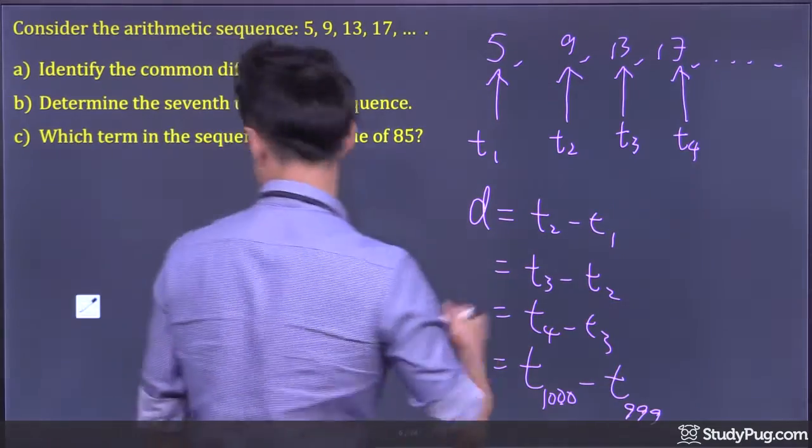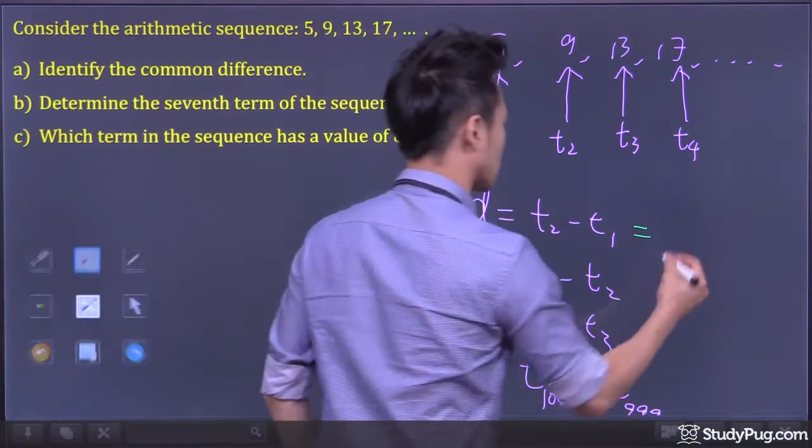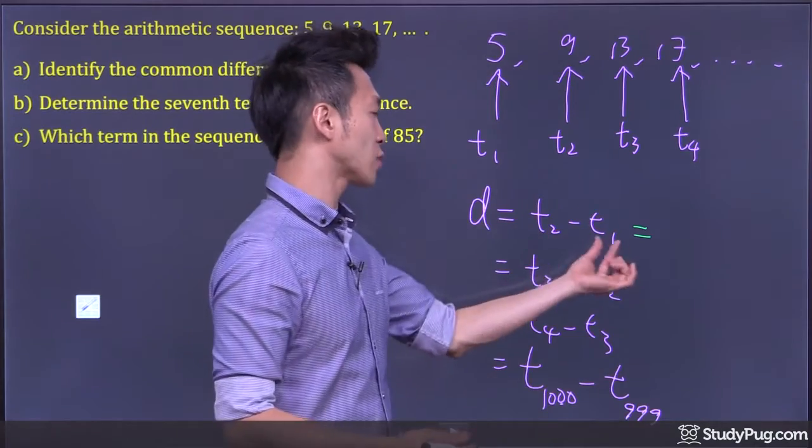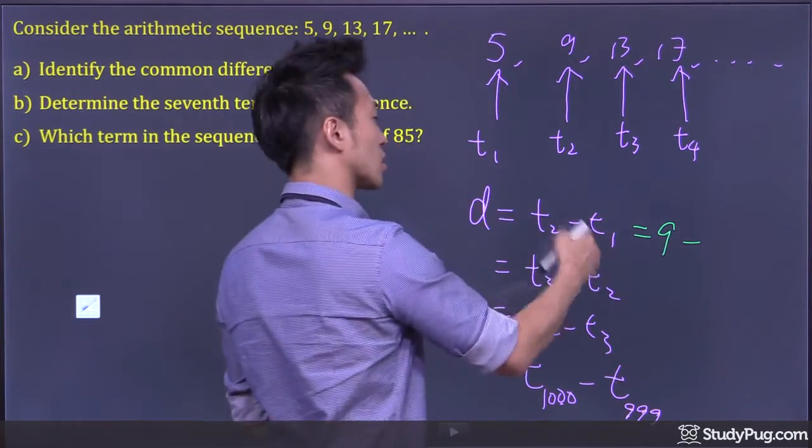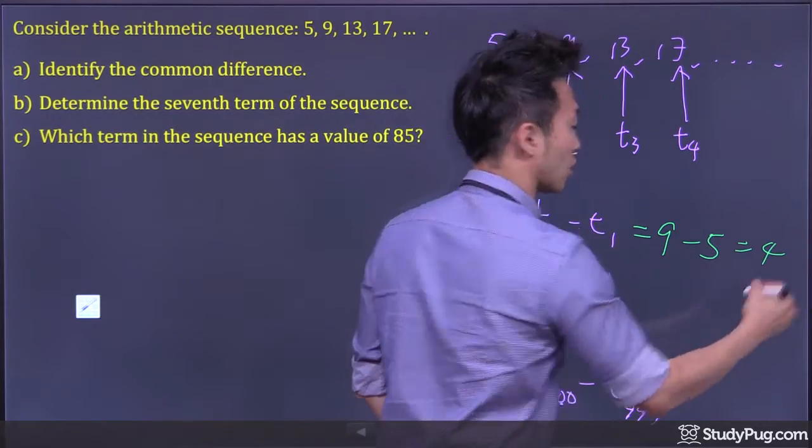So in this case, to find a common difference, if we go second term minus the first term, we will have second term is 9 minus first term is, in this case, 5. And we'll get 4.